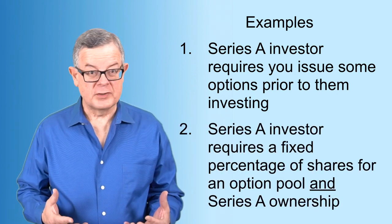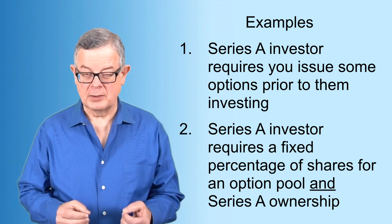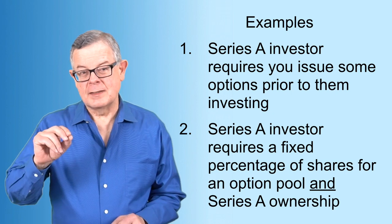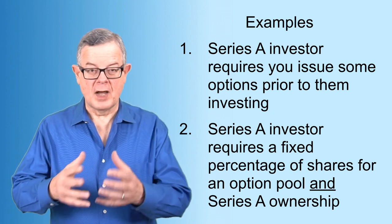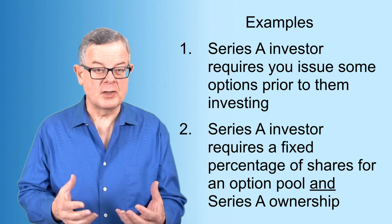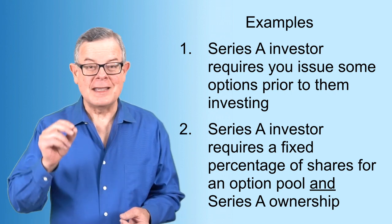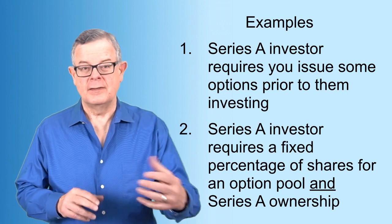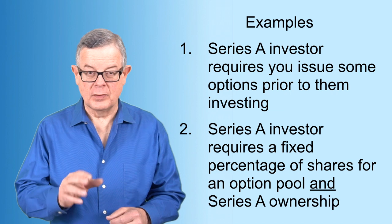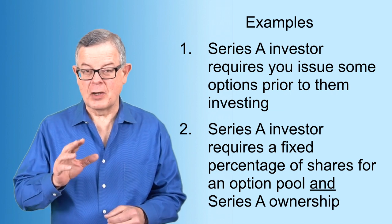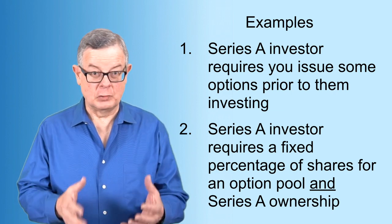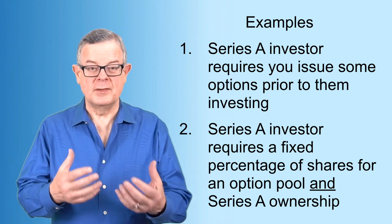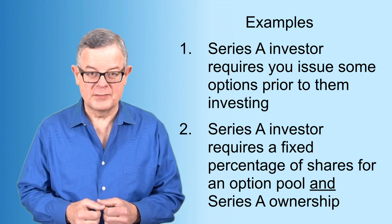But another scenario that protects the Series A investors much more strongly, if they have a strong enough negotiating position, is that they want to see a fixed percentage of shares going to an option pool and a fixed percentage of shares owned by the Series A investors at the end of the investment after all of the convertible securities convert. So in other words, they want the founders not only to absorb the impact of the dilution from the option pool, but they want them to absorb the dilution from converting all of those convertible securities.